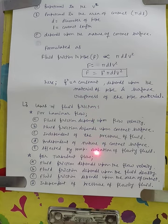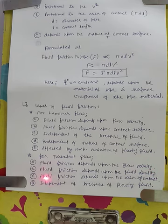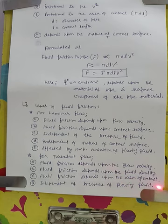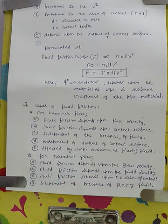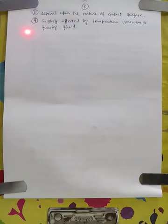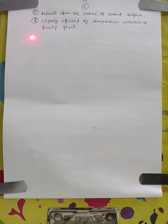For turbulent flow, the laws of fluid friction are: (1) fluid friction depends upon the flow velocity; (2) fluid friction depends upon the fluid density; (3) fluid friction depends upon the area of contact; (4) fluid friction is independent of the pressure of flowing fluid; (5) fluid friction depends upon the nature of the contact surface; (6) fluid friction is slightly affected by temperature variation of the fluid.